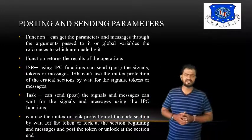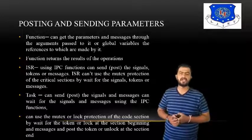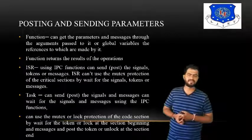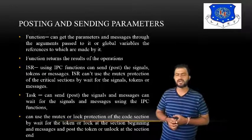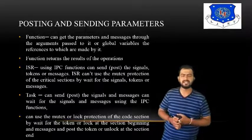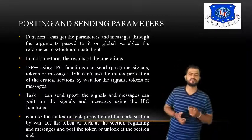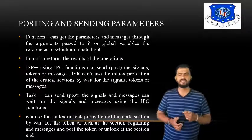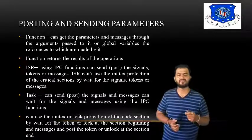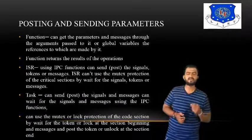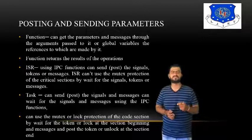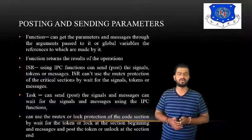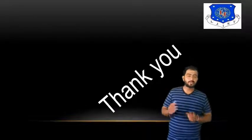Regarding posting and scheduling parameters: functions receive parameters or messages through arguments passed to them via global variables. Using IPC functions, the ISR can send signals, tokens, or messages, but the ISR cannot use mutex protections of critical sections by waiting for signals. A task can send and wait for signals and messages using IPC functions, and can use mutex or lock protections by waiting for a token or lock at the section beginning and releasing the lock at the section end.